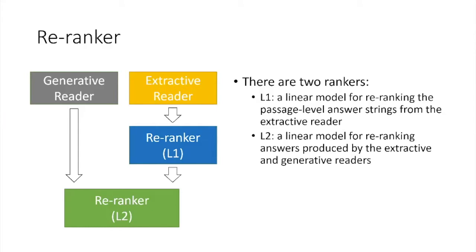After the reading stage, there are two re-rankers, L1 and L2, where L1 is to aggregate information over passages for producing a short list of answer strings for the extractive reader. And L2 then produces the final answer prediction of our system based on the outputs from both extractive and generative readers.